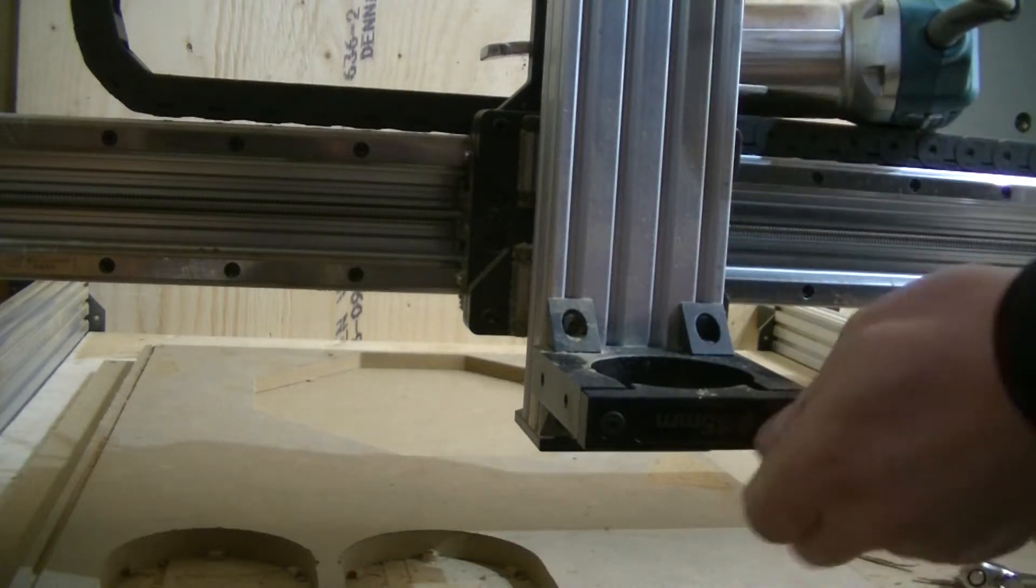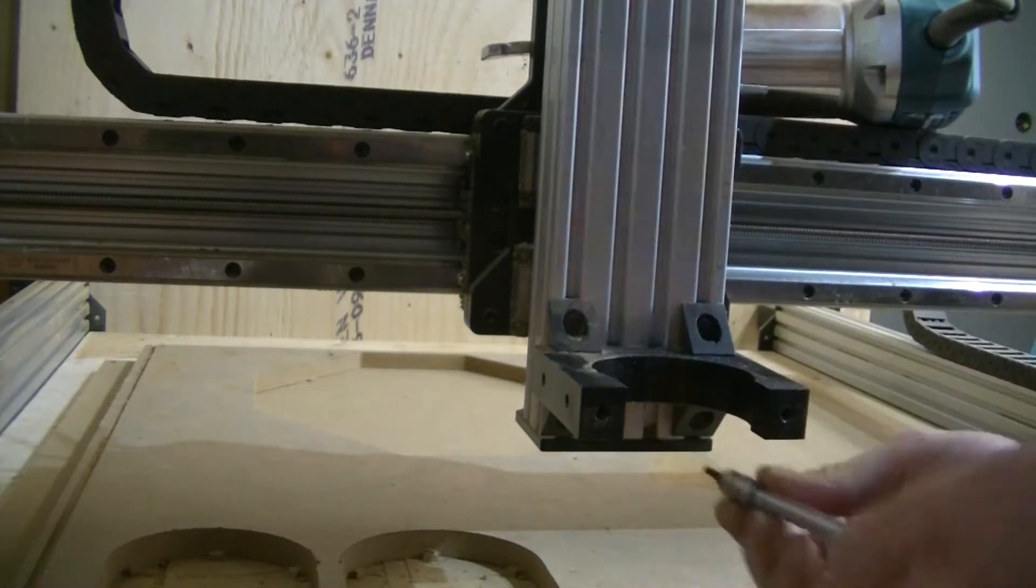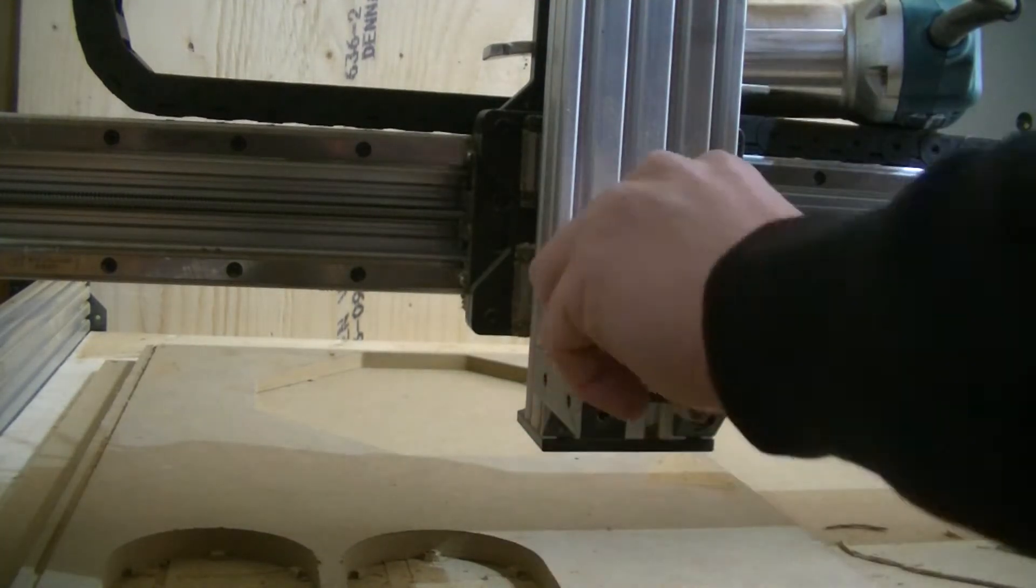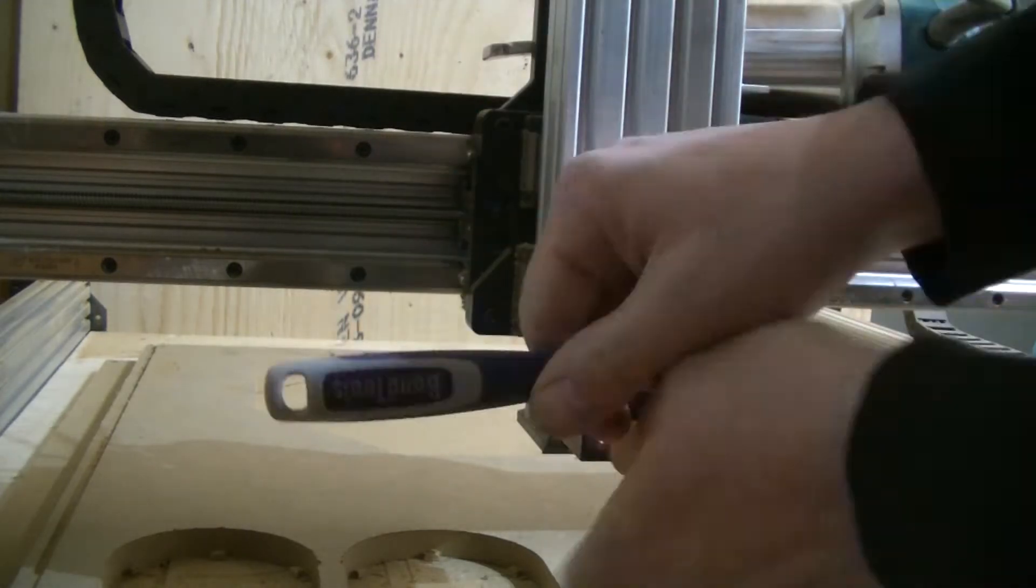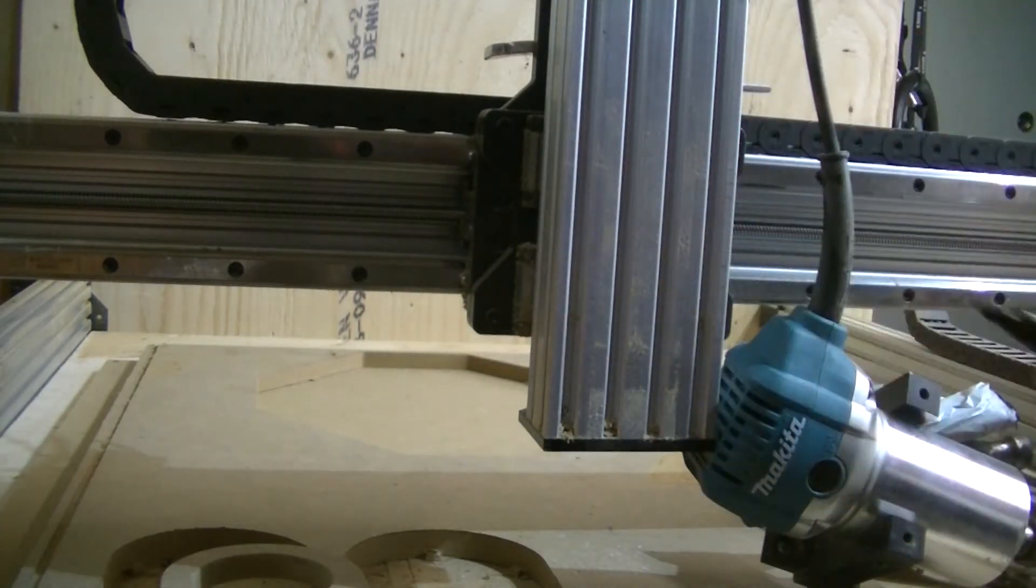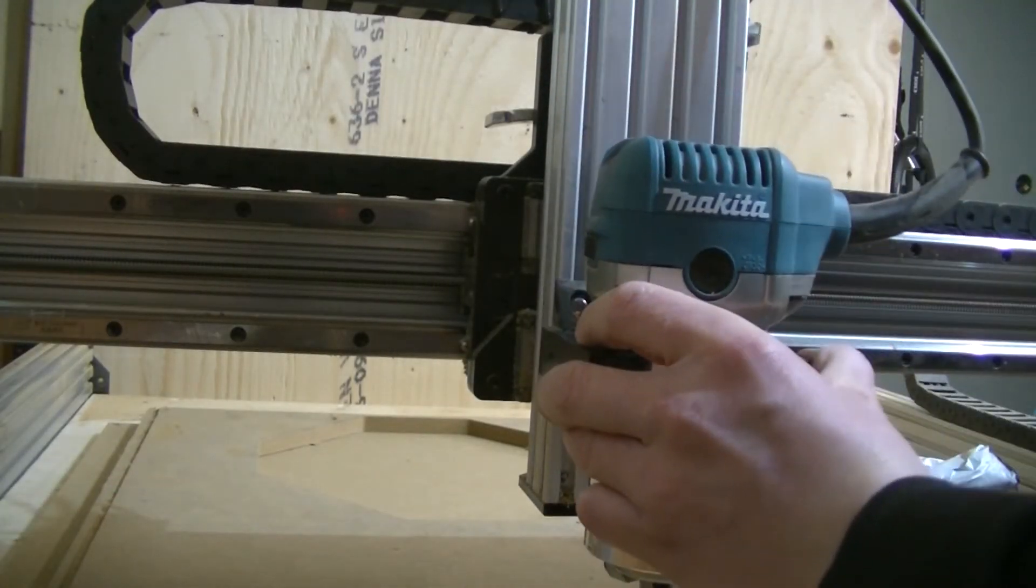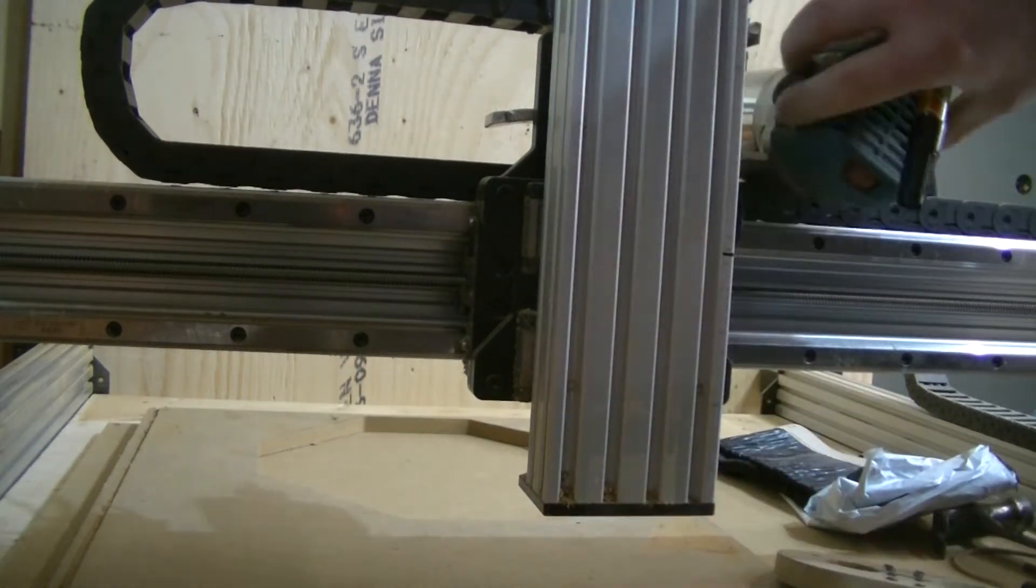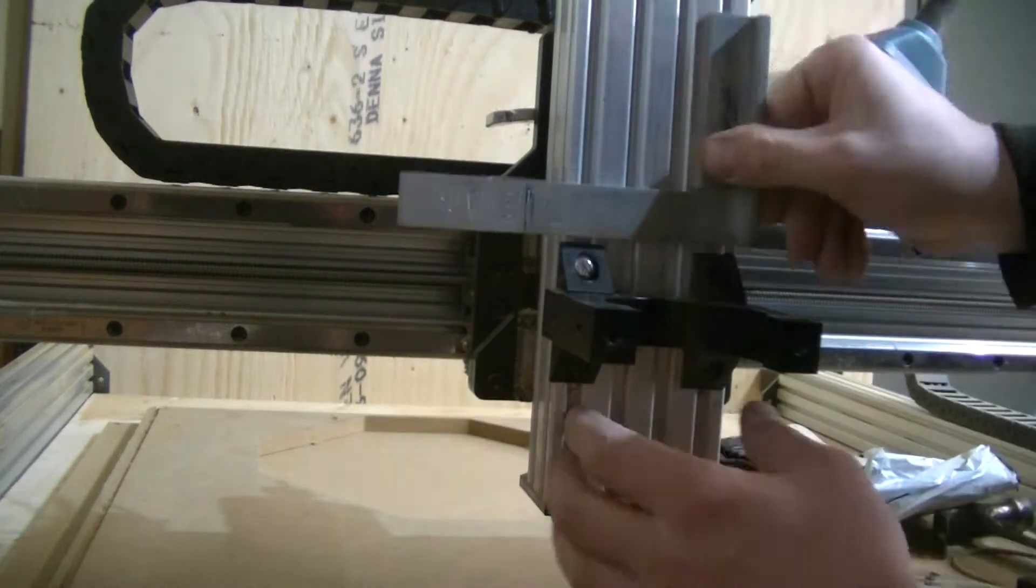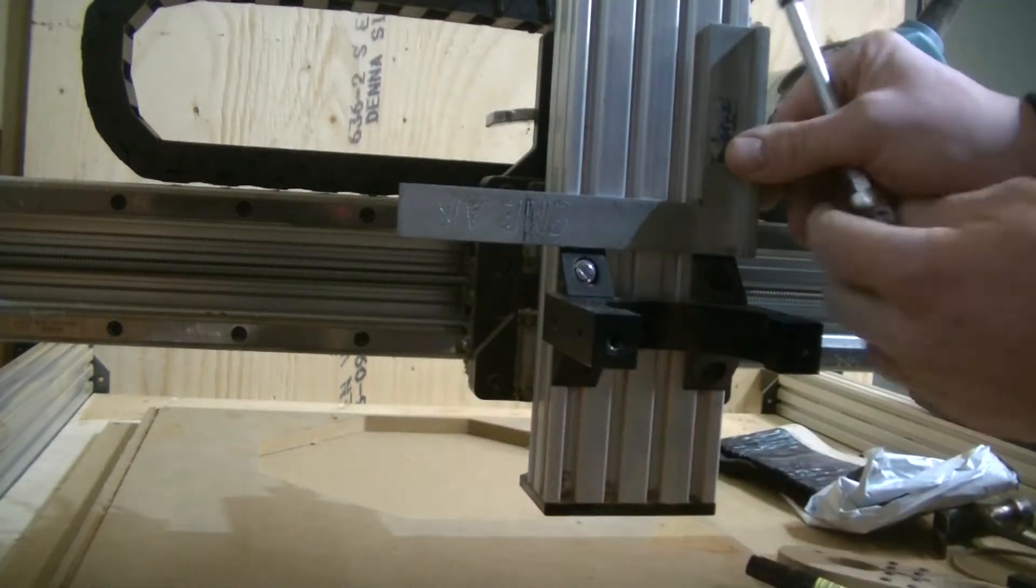Here you see me removing the router from the Z-axis. And those of you with keen eyes probably noticed that I stripped one of the allen head screws from trying to remove it, and I ended up having to hammer a torx bit into it to get it out. I talked about this several times in the router build videos, but basically, all the machine screws that came in the mechanical kit from Bulkman were made from cheese. Or at least some material as soft as cheese.